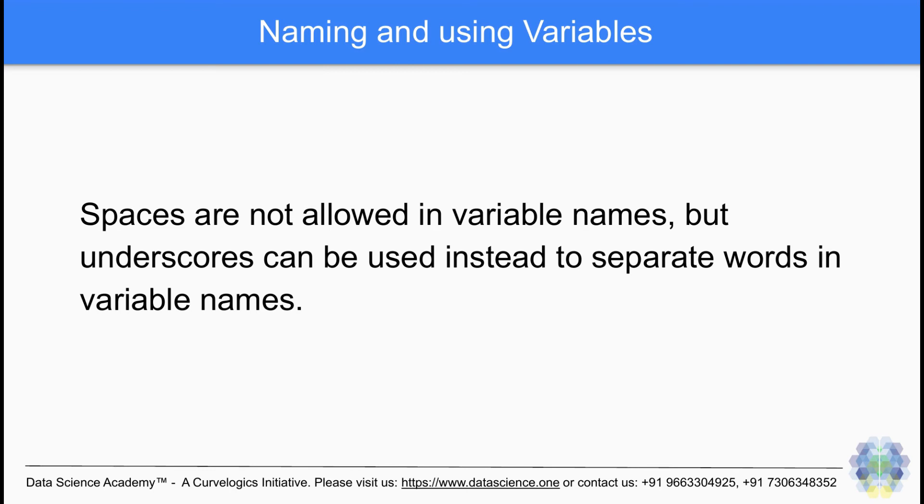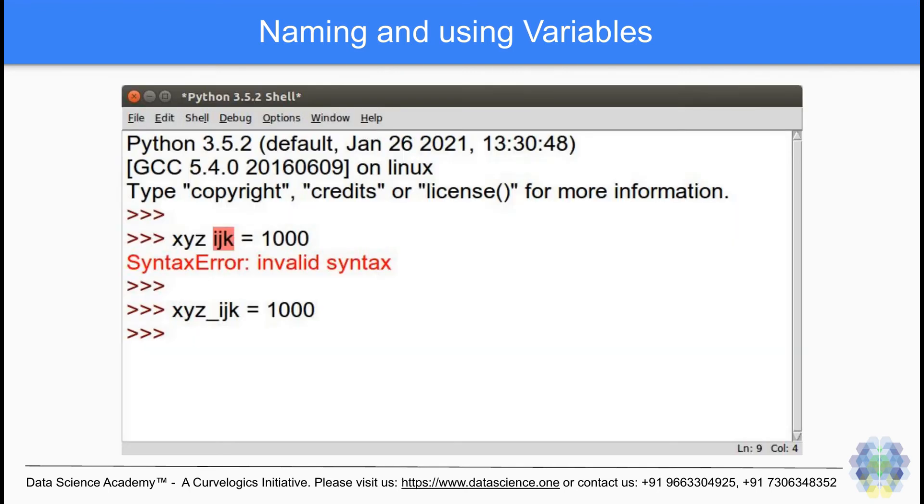Spaces are also not allowed in variable names, but underscores can be used instead to separate words in variable names. For example, xyz space ijk is an invalid variable name, whereas xyz_ijk is a valid variable name.